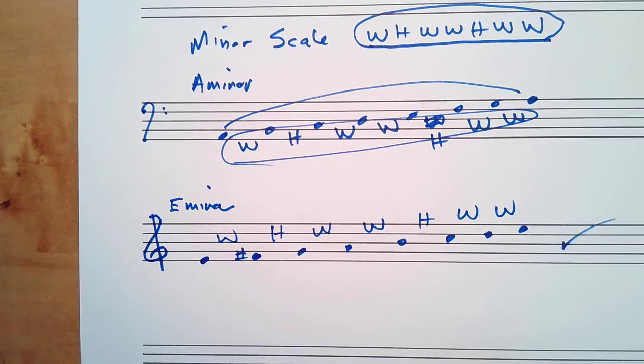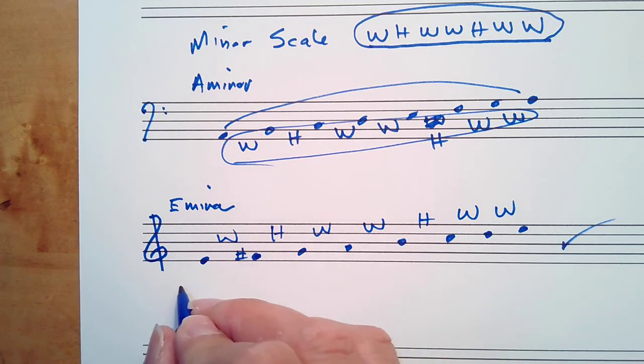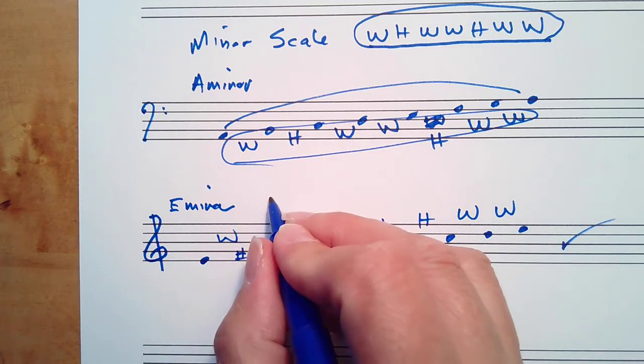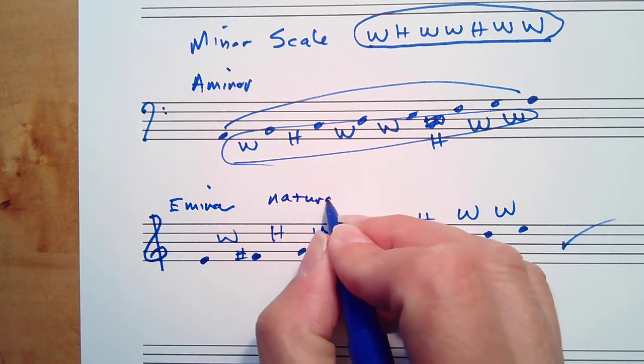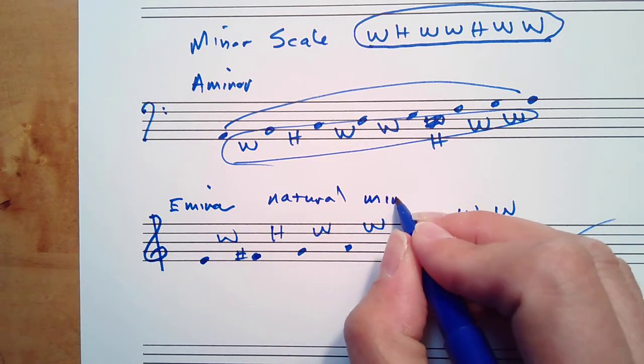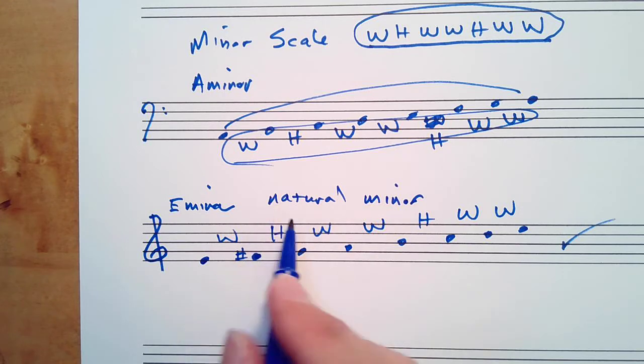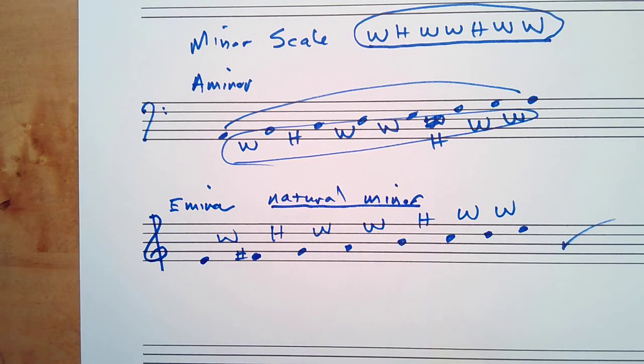So the E minor scale is E, F sharp, G, A, B, C, D, E. I want to make sure you know that this sometimes is called natural minor, and we'll explain what that means in a subsequent video or class.